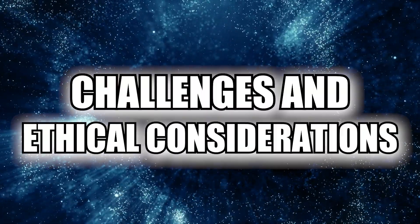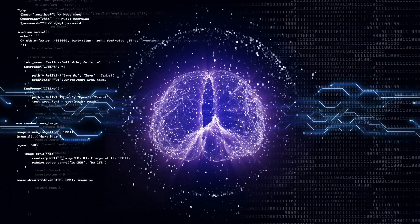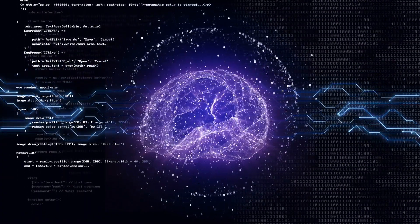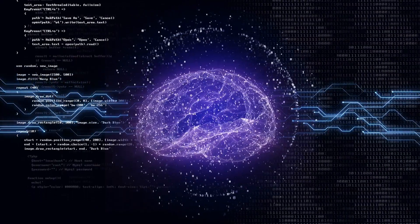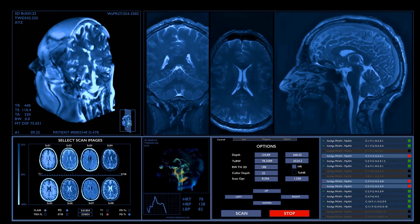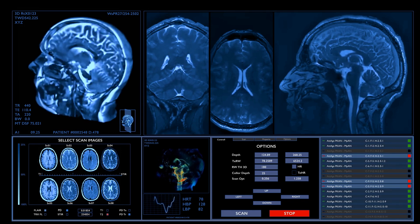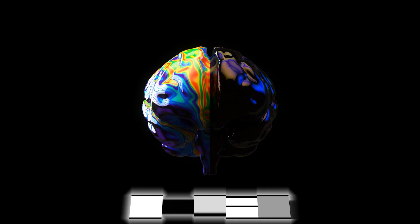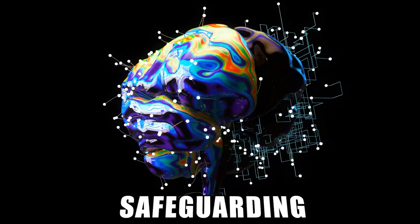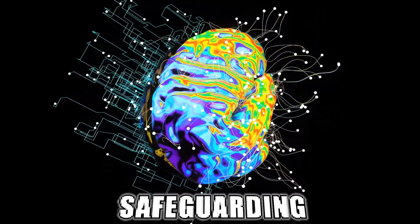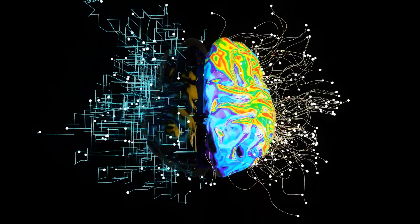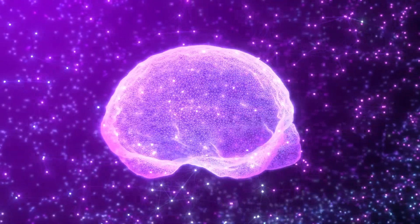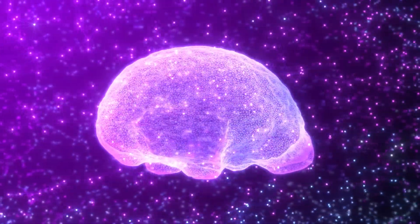Challenges and Ethical Considerations. Despite its immense potential, the development and implementation of Neuralink's technology raise a myriad of complex challenges and ethical considerations that must be carefully navigated. One of the foremost concerns revolves around the issue of privacy and data security. Given the intimate nature of the information collected by Neuralink's brain-machine interface, safeguarding the privacy and confidentiality of users' neural data is paramount. Without robust safeguards in place, there is a risk of unauthorized access, misuse, or exploitation of individuals' neural information, raising serious ethical and legal implications.